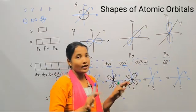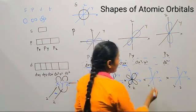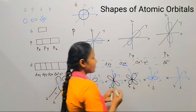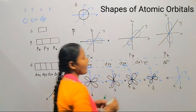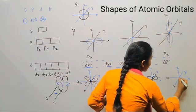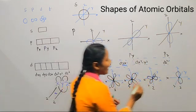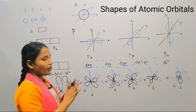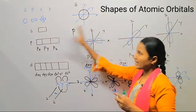For dx²-y², one orbital lies along the x-axis and another lies along the y-axis. For dz², there is one dumbbell shape along the z-axis with a ring around it — that is the dz² orbital. These are all the shapes of the atomic orbitals: s is spherical, p is dumbbell-shaped, and d is double dumbbell-shaped.